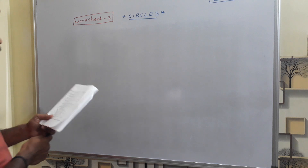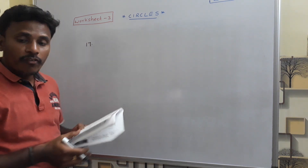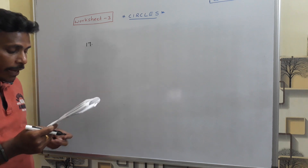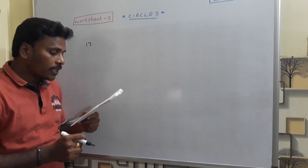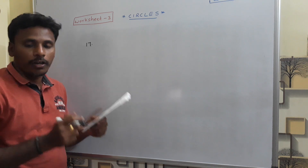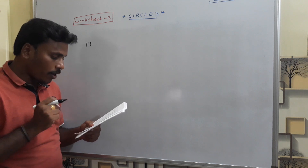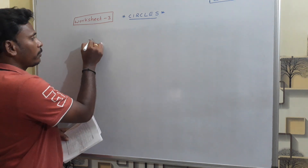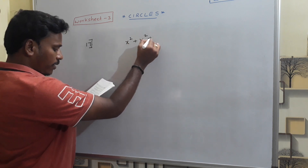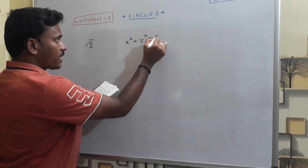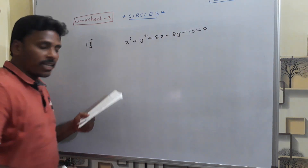So, problem 70: area of the triangle formed by the pair of tangents drawn from the origin to the circle and the chord of contact of the origin. That's the question. We have a circle: x² + y² − 8x − 8y + 16 = 0 is the given circle equation.